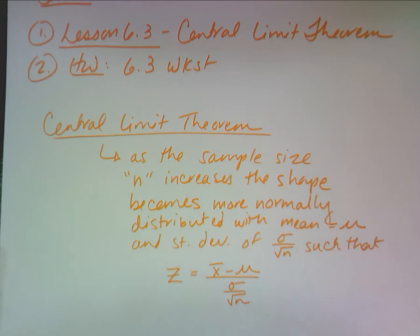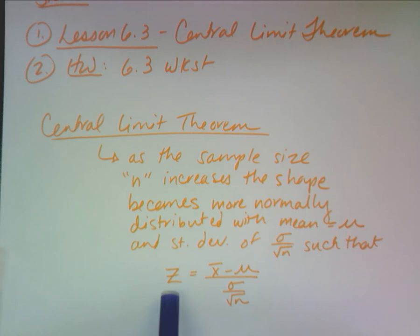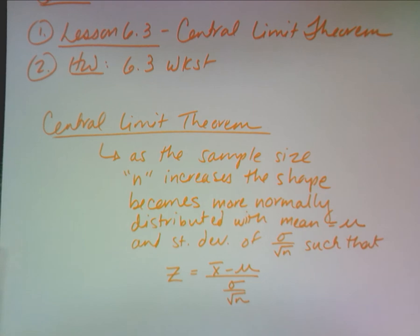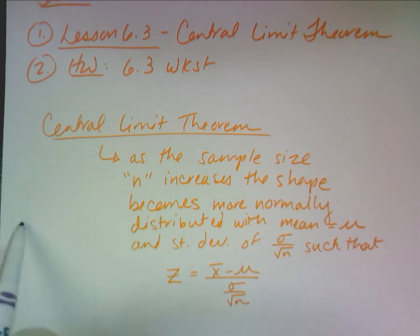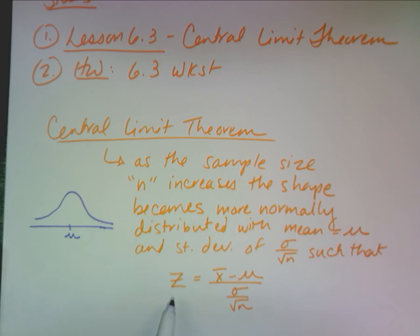The Central Limit Theorem states that as the sample size n increases, the shape becomes more normally distributed with a mean of mu and a standard deviation of sigma over the square root of n, such that your z formula is now x bar minus mu over sigma divided by the square root of n. As I take more and more random samples and increase my n, I still get a normally distributed graph and my mean is still mu.